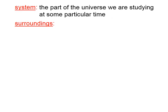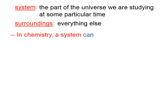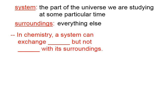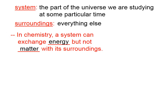A system is the part of the universe we are studying at some particular time, whereas the surroundings — that's everything else. In chemistry, a system can exchange energy but not matter with its surroundings.